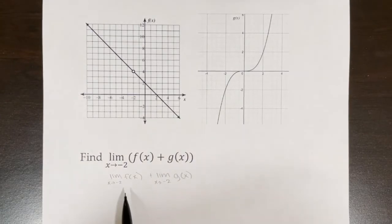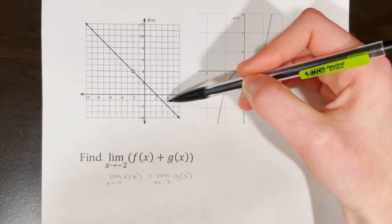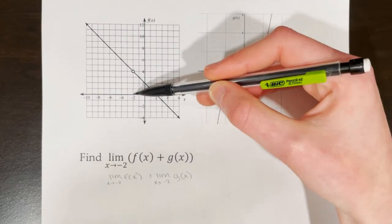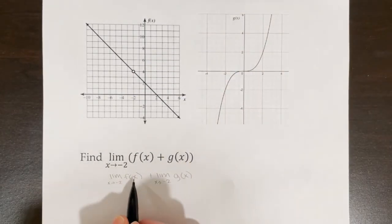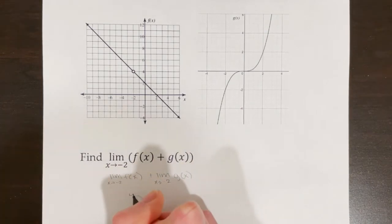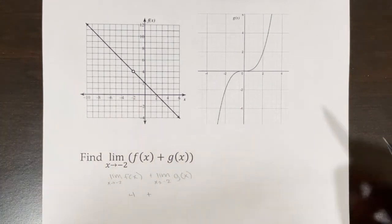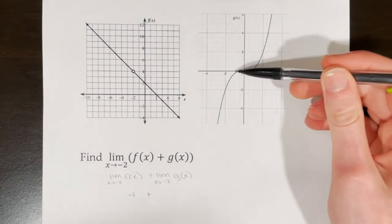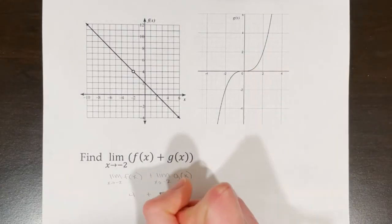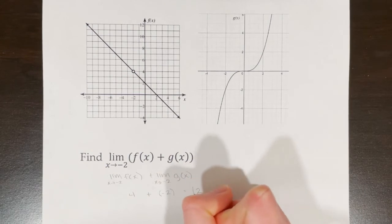Now this becomes more manageable. We can look on the graph and see as x is approaching negative 2, y is approaching 4 for f(x). That means the limit of f(x) as x goes to negative 2 is 4. On the other graph for g(x), the limit as x goes to negative 2 is negative 2. So we have 4 plus negative 2, which is 2.